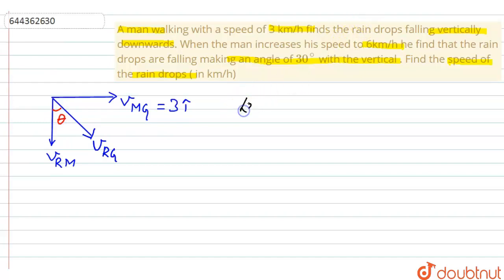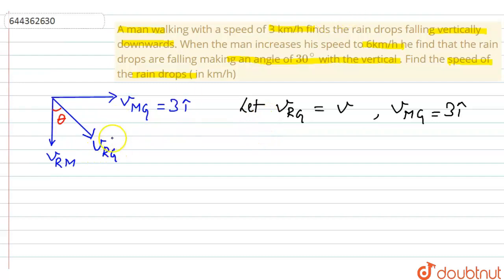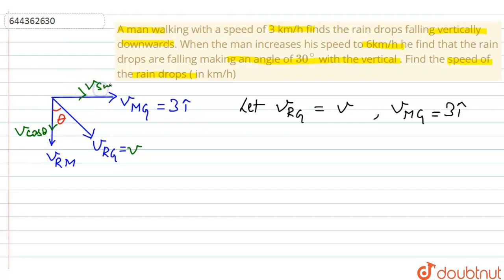Let us say that the velocity of rain with respect to the ground is equal to v — this is what we have to find out. The velocity of man with respect to ground is 3 i-cap. I will make the components of v: the component here will be v cos theta, and the other component will be v sine theta.